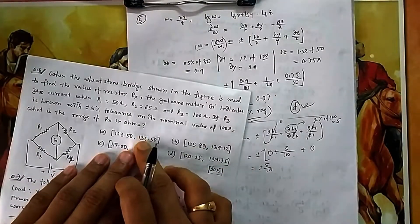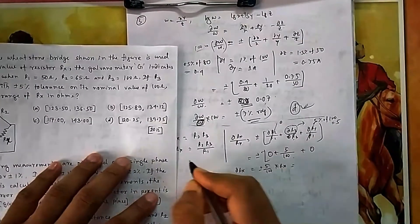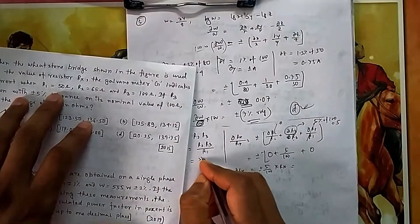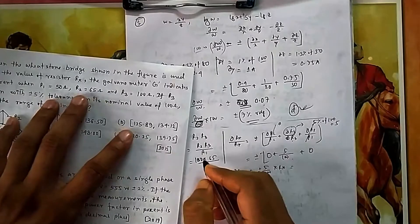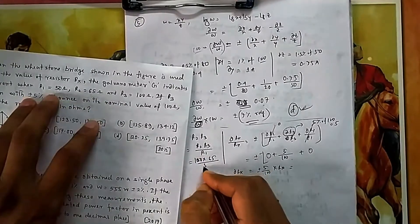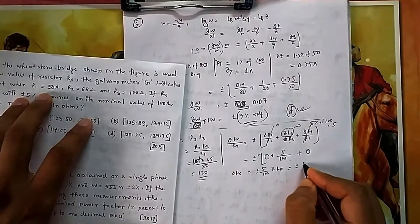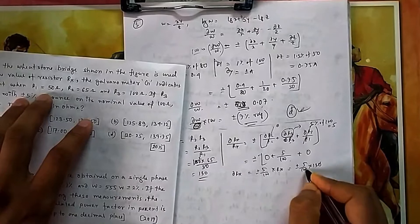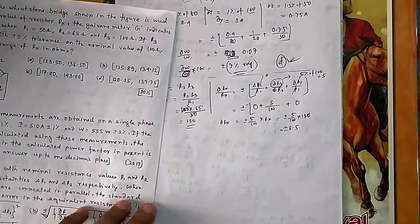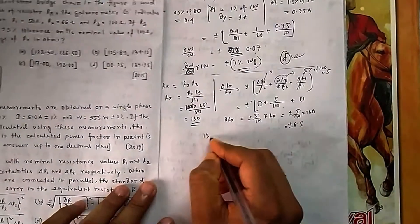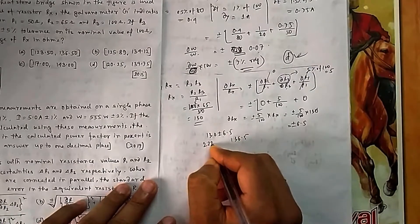To get the absolute error in Rx, multiply by Rx. In normal conditions, Rx = R2·R3/R1 = 100×65/50 = 130. So the error is ±(5/100)×130 = ±6.5. Therefore Rx lies between 130 + 6.5 = 136.5 and 130 − 6.5 = 123.5 ohms. That is option A.